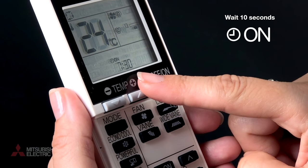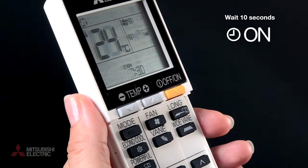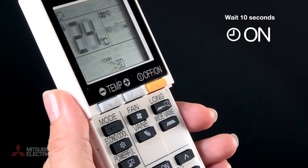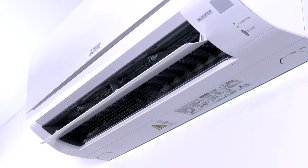To save this as our timer on setting, wait 10 seconds for the timer on symbol to stop flashing in the display. The air conditioner is now set to come on at that set time.